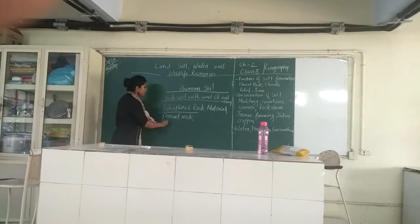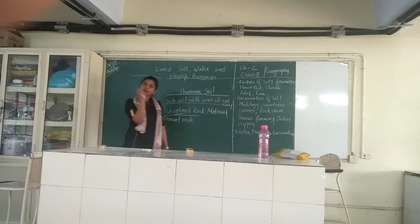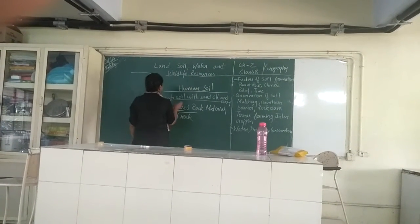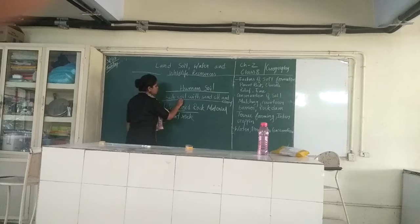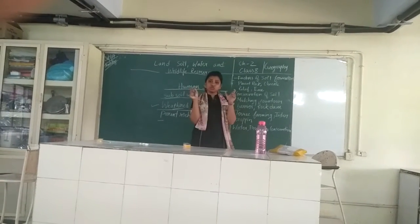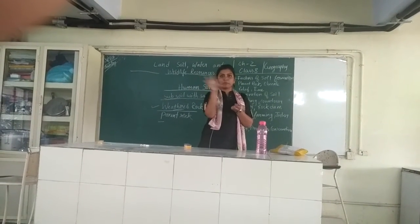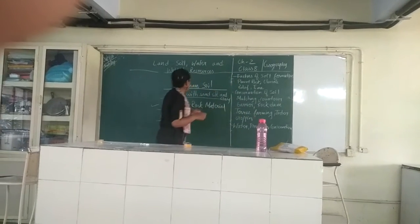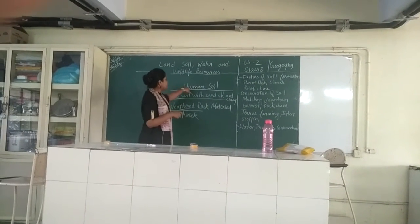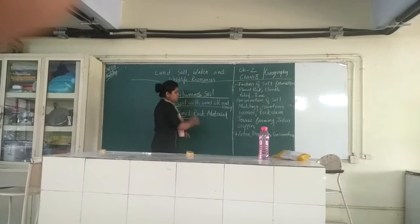First it is a parent rock. That is the weathered rock — weathered means when the parent rock is broken into bits and pieces. That is just the subsoil. When the big rock is there, it is broken into little drops, and then it becomes subsoil, and then it becomes the humus soil.